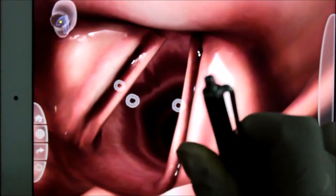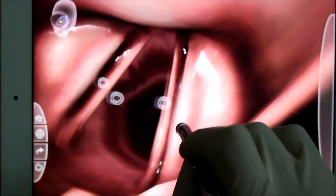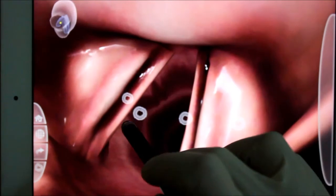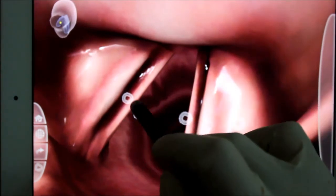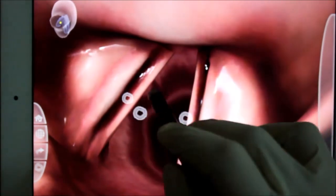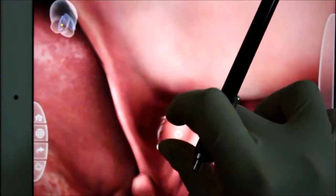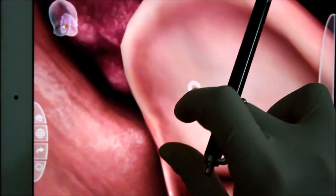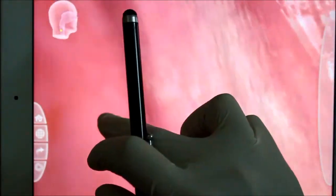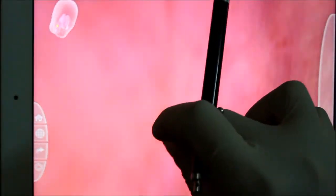Now as we can see here, we have the true vocal cords. They are the part of phonation which produce sound during speaking. And posterior to it we can see